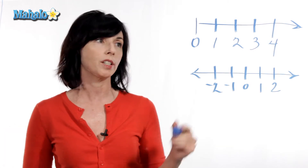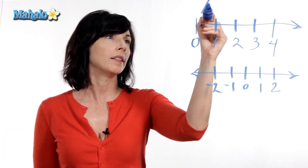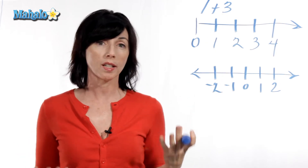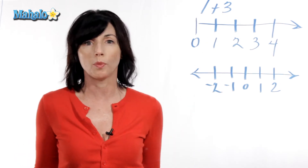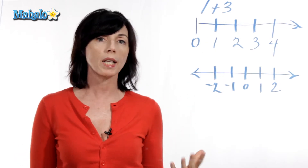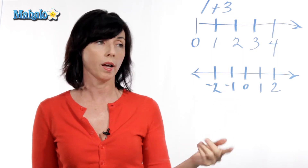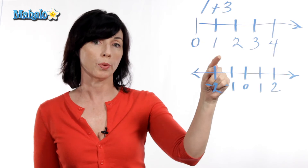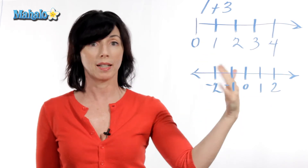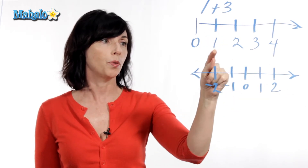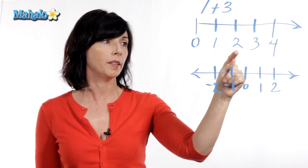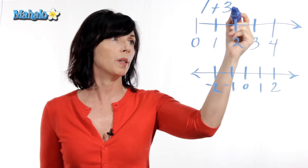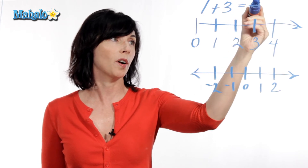So let's look at an addition equation. Let's say we have one plus three. Now we can use a number line to understand really what one plus three means. One plus three means that we start at the number one on our number line, and then we move three units to the right because we're adding. So if we start here and we move one, two, three units to the right, that gets us to four. So one plus three is equal to four.